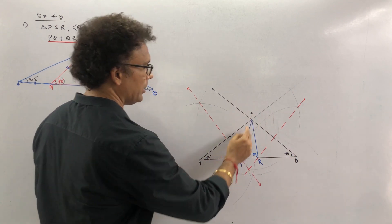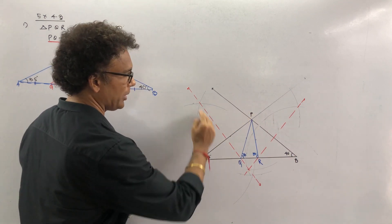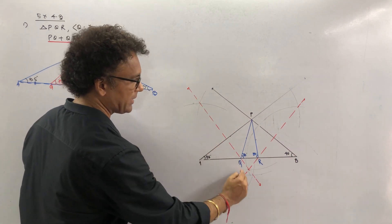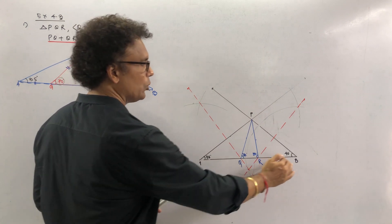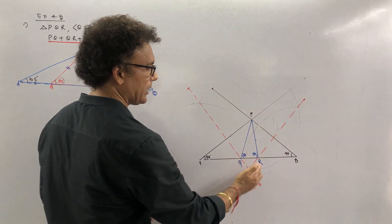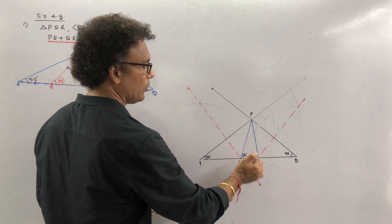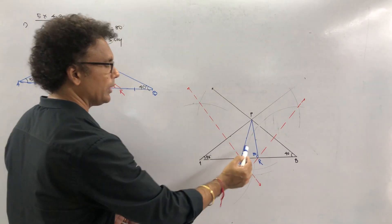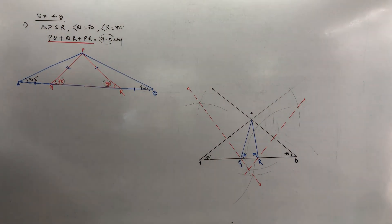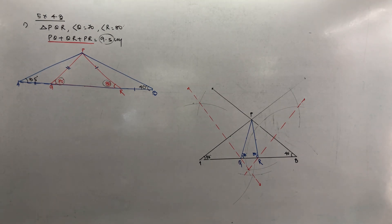Draw triangle PAB with those half angles. Then bisect PA — it will meet at point Q. Then bisect PB — it will meet at point R. Join Q and R, and this is your required triangle PQR. This is how you do exercise 4.3, first sum, where you are given the perimeter of the triangle.